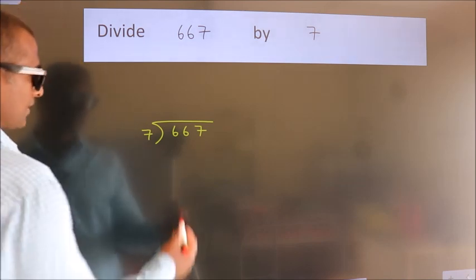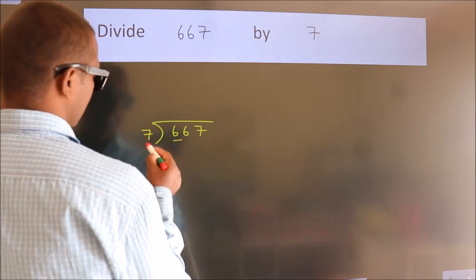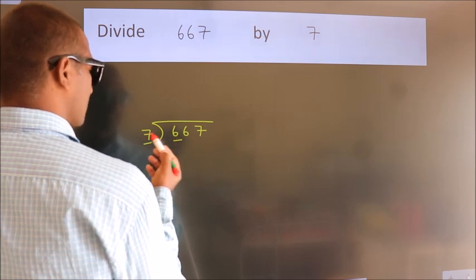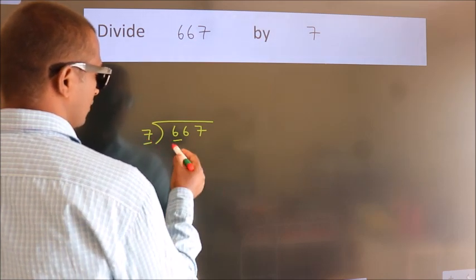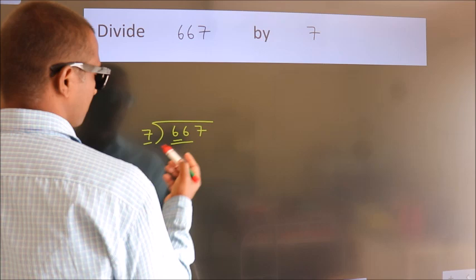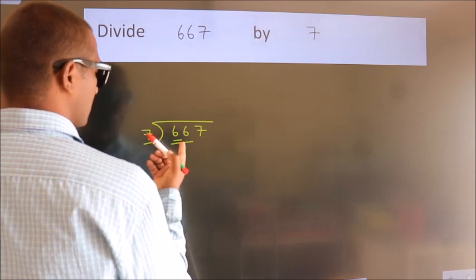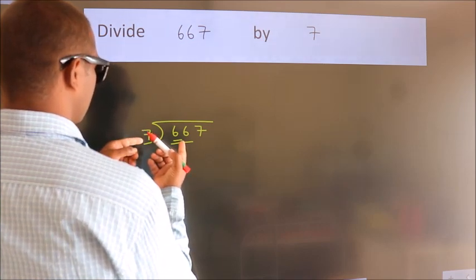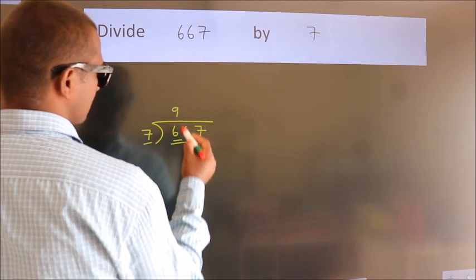Next, here we have 6, here 7. 6 is smaller than 7, so we should take two numbers: 66. A number close to 66 in the 7 table is 7 times 9, which is 63.